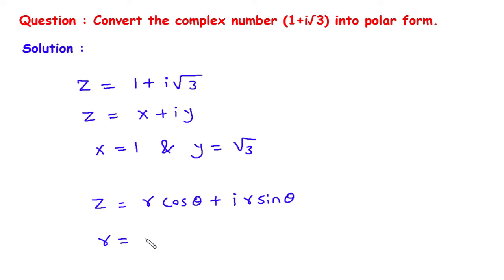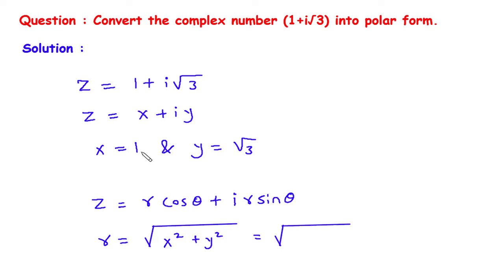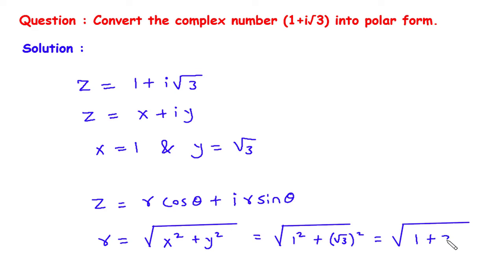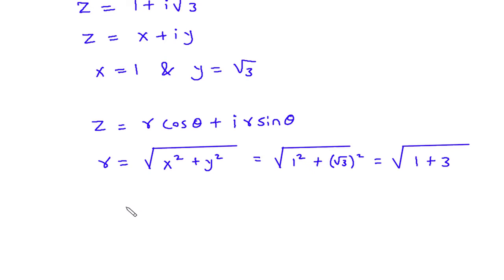r is equal to under root of x squared plus y squared. Here x squared is 1 squared and y squared is root 3 squared, so this will be 1 plus 3. Under root of 4 is equal to 2, therefore r is equal to 2.